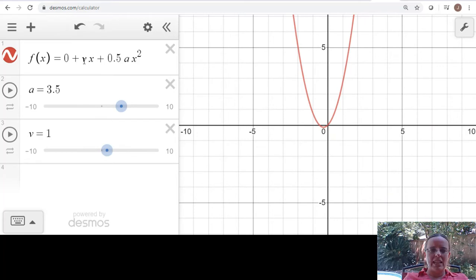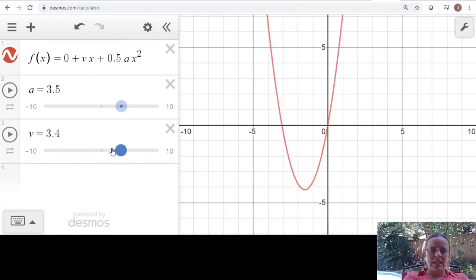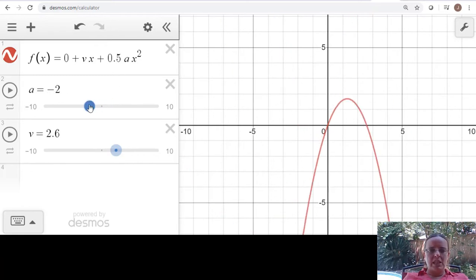And then if you have an acceleration, you add in this one-half ax squared. So you'll notice in here that every time I type something like v or a that's not a number, it gives me the option to add that slider bar in. So this will be very convenient for graphing out. This is the position curve.